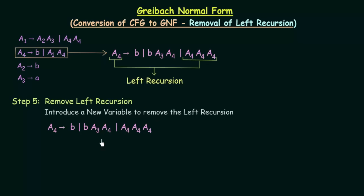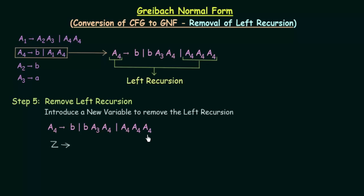This production is the same thing — I have just copied it down as it is. We see that the problematic production is A4 gives A4, A4, A4. We are not supposed to have a variable or non-terminal symbol at the start. So in order to introduce a new variable, let's call it Z. The production for Z will take the variables that follow the problematic A4 — which is A4, A4 — and write it once along with the new variable Z and once without it.